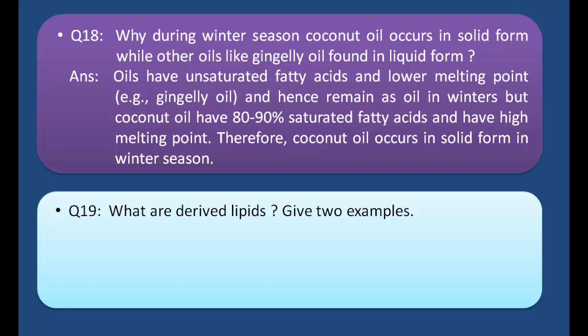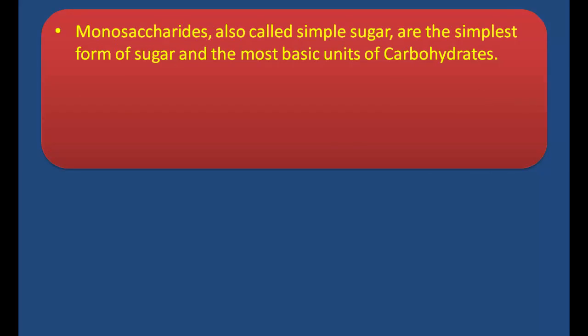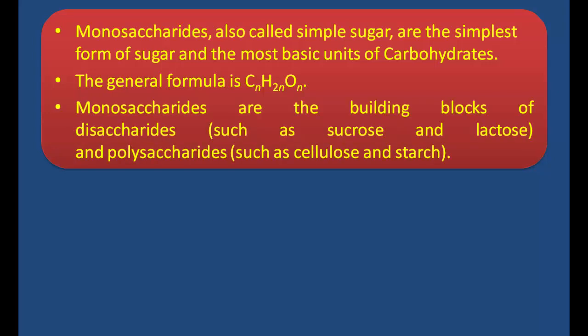Q19: What are derived lipids? Give two examples. Derived lipids are obtained by hydrolysis of simple and compound lipids. Examples of derived lipids are cholesterol and terpenes. Some key points about monosaccharides: monosaccharides are also called simple sugars. They are the simplest form of sugar and the most basic units of carbohydrates. The general formula is Cn(H2O)n. Monosaccharides are the building blocks of disaccharides such as sucrose and lactose, and polysaccharides such as cellulose and starch.